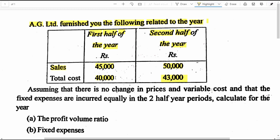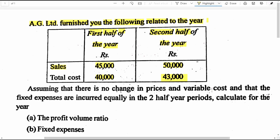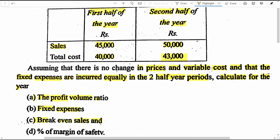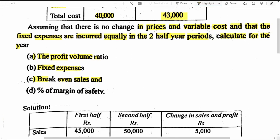If you subtract total cost from the sales of the given period, you will come to know the profit earned by the business in that particular period. Assuming there is no change in prices and variable cost and that the fixed expenses are incurred equally in the two half year periods, calculate the PVR, fixed expenses, break-even point sales, and percentage of margin of safety on sales.